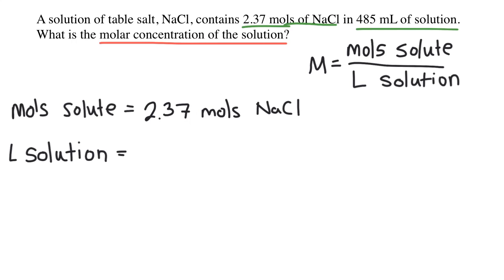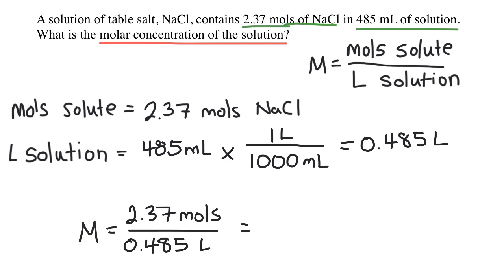Next, I need liters of solution. Do I have that? Not exactly. I know the milliliters of solution, and I can convert that pretty easily into liters. I'll use dimensional analysis to convert 485 milliliters times the conversion factor that compares milliliters to liters, which is one liter over 1000 milliliters. So really, I'm just taking 485 and dividing it by 1000 to get 0.485 liters of solution. All right, now I can put these numbers into the equation and plug it into my calculator to get 4.89 molar solution.